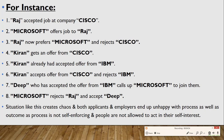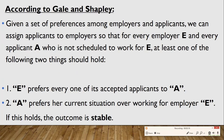Situations like these create chaos, and both applicants and employers are unhappy with the process. The process is not self-enforcing and people are not allowed to act in their own self-interest. According to Gale and Shapley, if there is a set of preferences among employers and applicants, we can assign applicants to employers such that for every employer E and every applicant A not scheduled to work for E, at least one of the following two conditions holds: either E prefers every one of its accepted applicants to A,